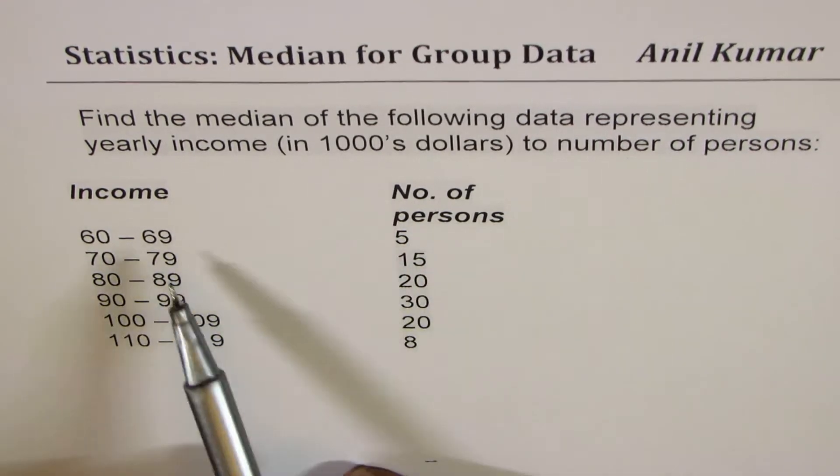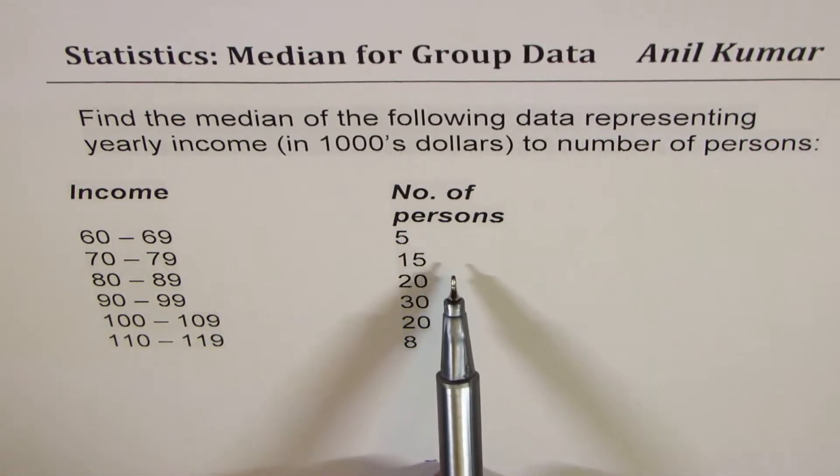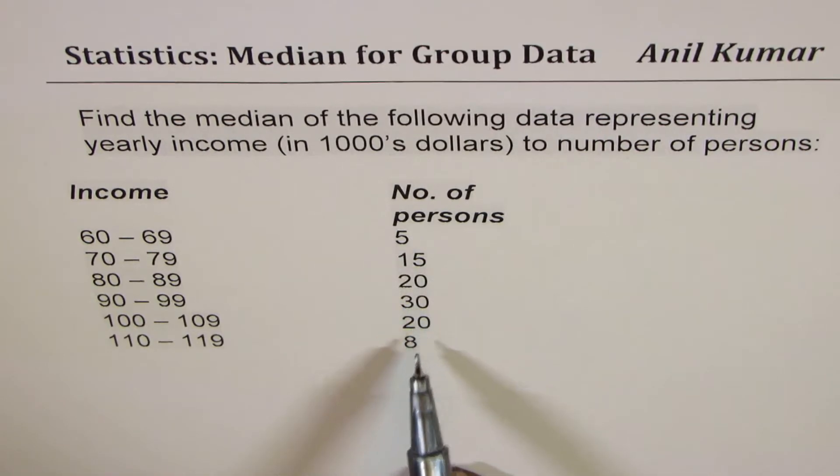The number of persons drawing that income in that organization are 5, 15, 20, 30, 20, and 8 respectively.